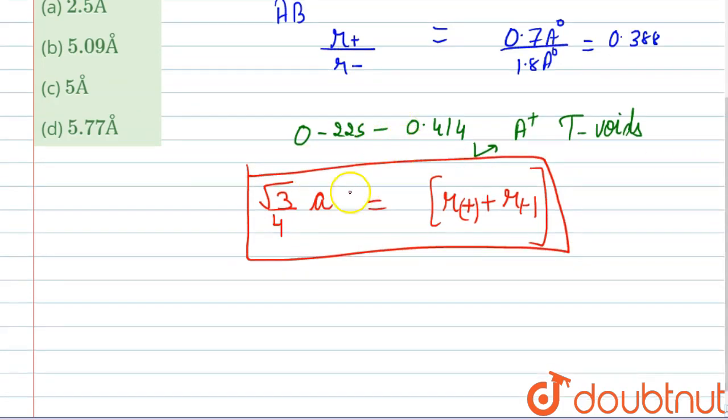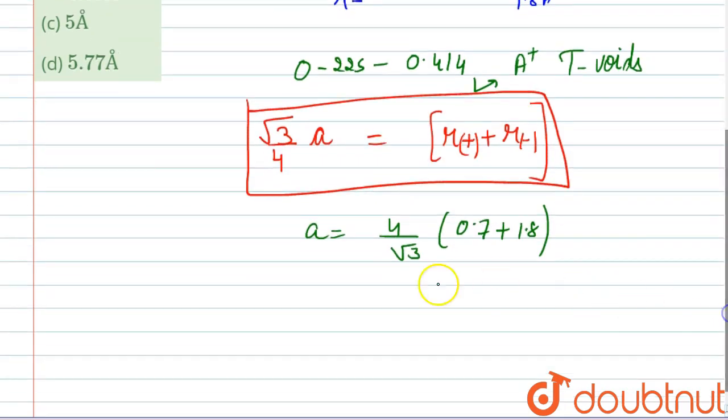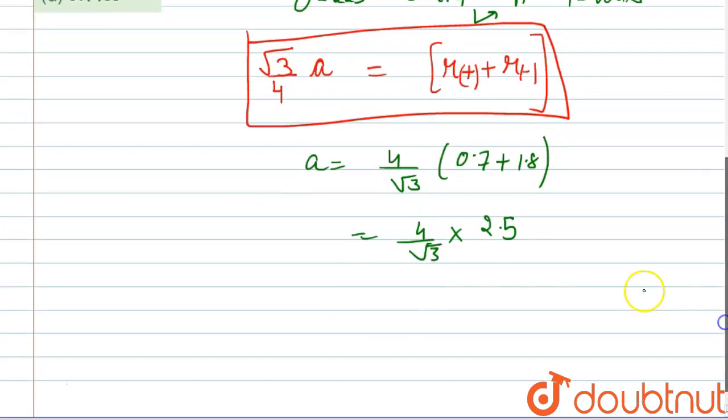Now we will fill in the values. We have to calculate the edge length, that is a. So a equals 4/√3 times (0.7 + 1.8), which is 4/√3 times 2.5. This will be approximately 5.77 angstrom.